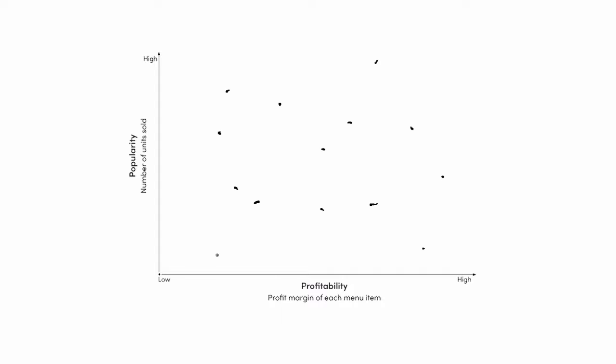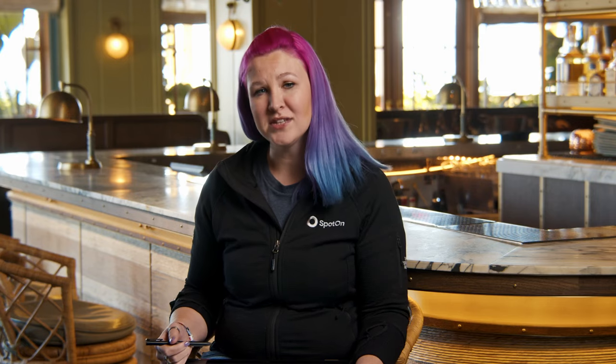You might see some clusters, you might see some outliers. So long as every item makes it on this grid, we're doing well. At this point, we're going to break it up into four quadrants.